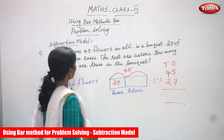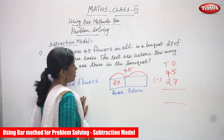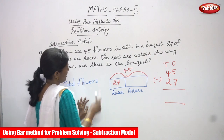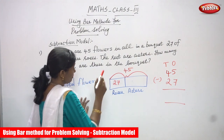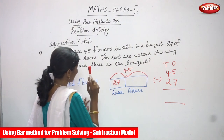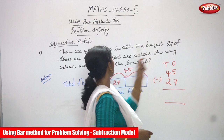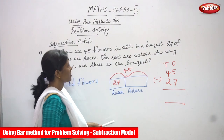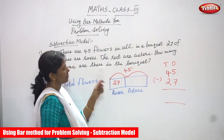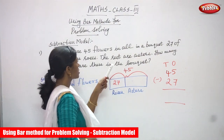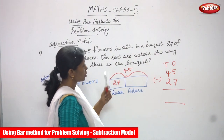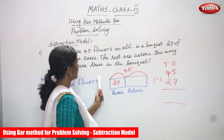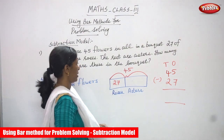27 of these are roses, so the number of roses is 27. The rest are asters — asters is also one kind of flower. So how many asters are there in the bouquet?